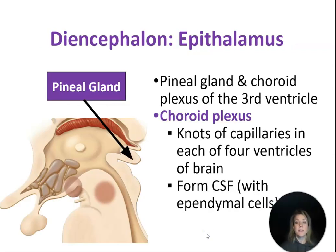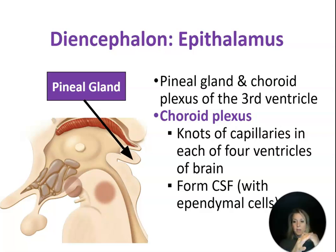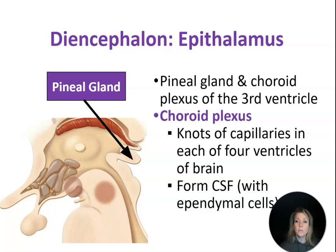The last part of our diencephalon is the epithalamus, which includes the pineal gland and the choroid plexus of the third ventricle. The third ventricle bathes the inside of the thalamus around the intermediate mass. The roof of the third ventricle contains capillaries that secrete cerebrospinal fluid with the help of ependymal cells. The choroid plexus isn't only in the third ventricle — it's also in all of the other ventricles of the brain.